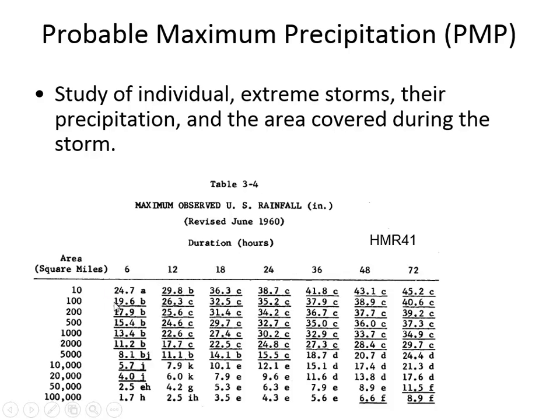Here in West Virginia, our annual average in Huntington is about 40 inches per year. So 20 inches in six hours over a 100 square mile watershed would be like the maximum ever in the entire history of the Earth — there could not be more rainfall than that over such an area.